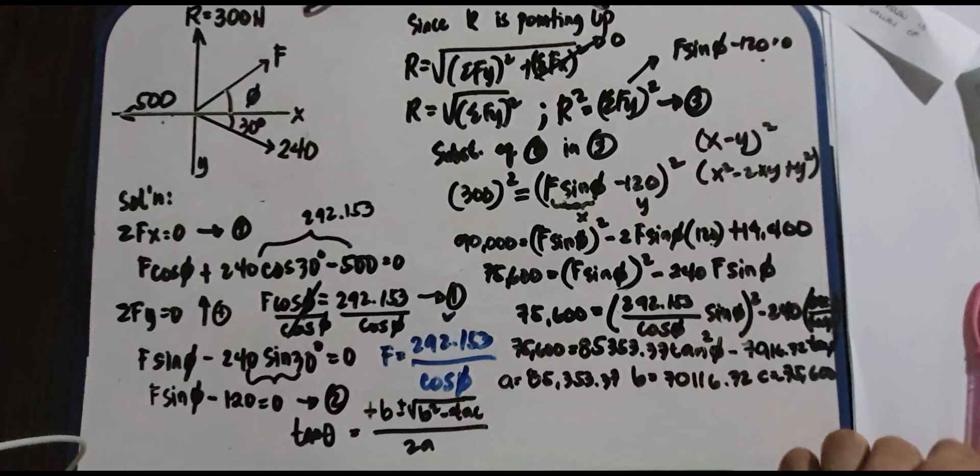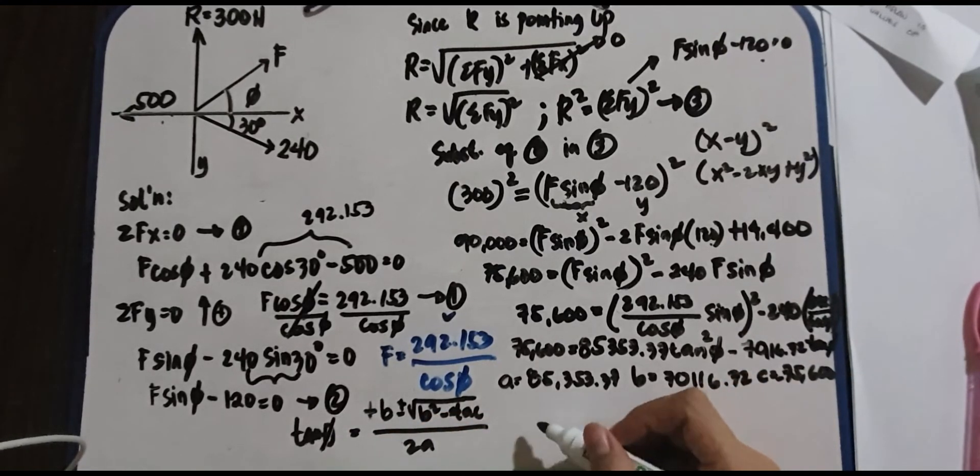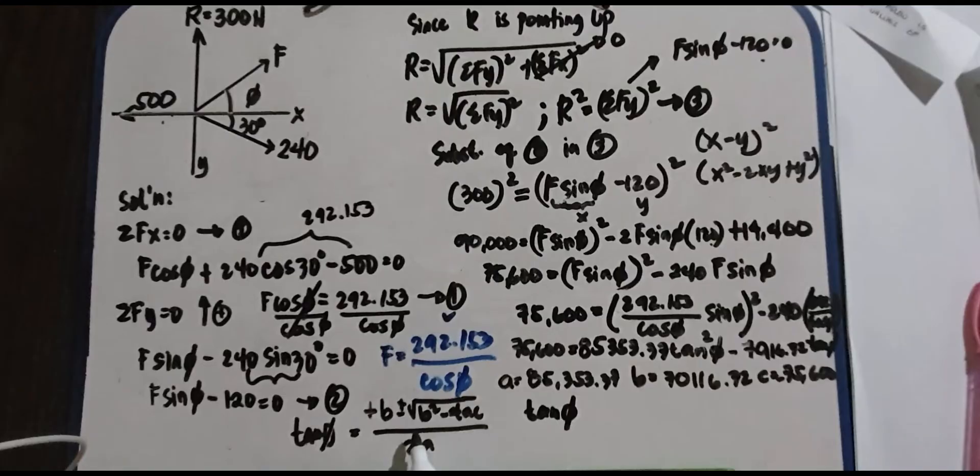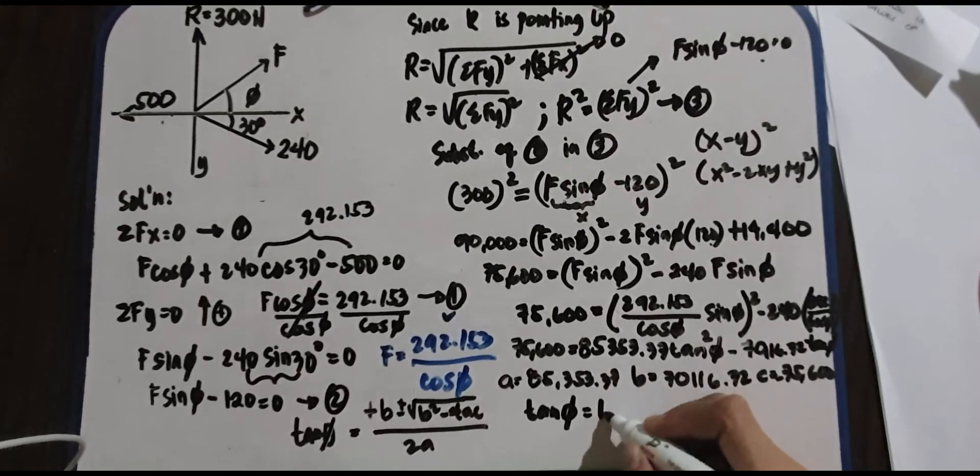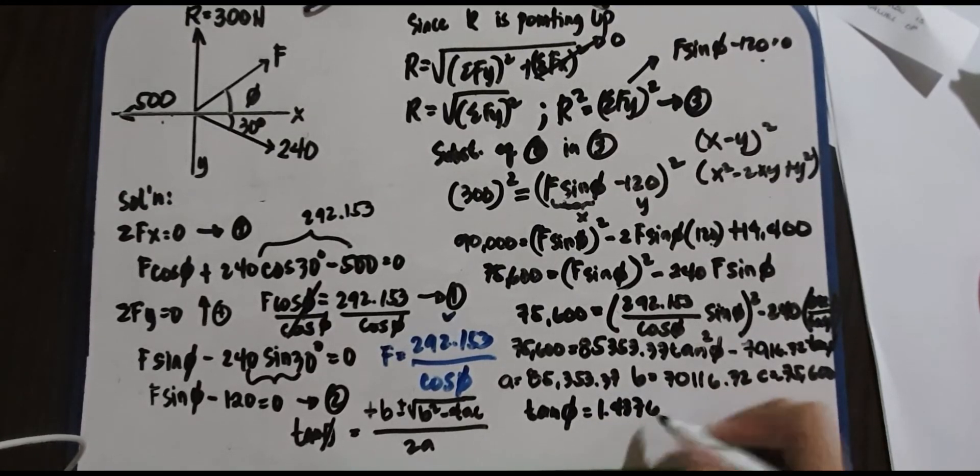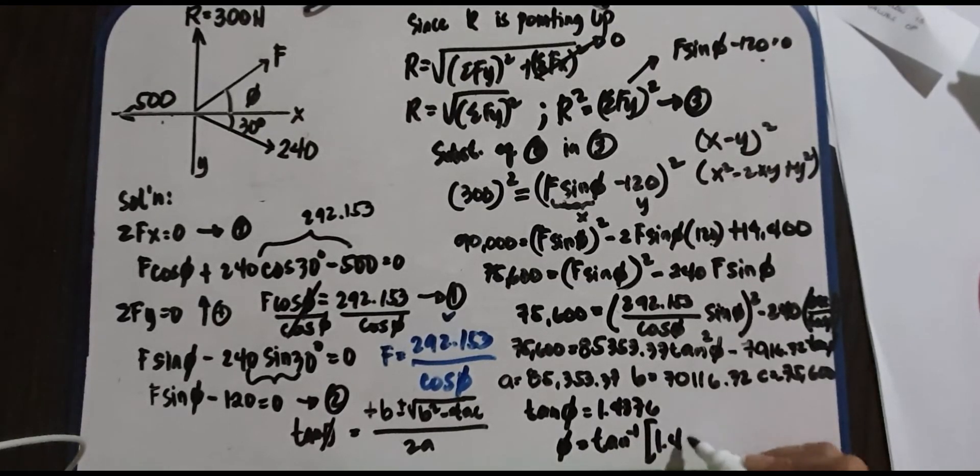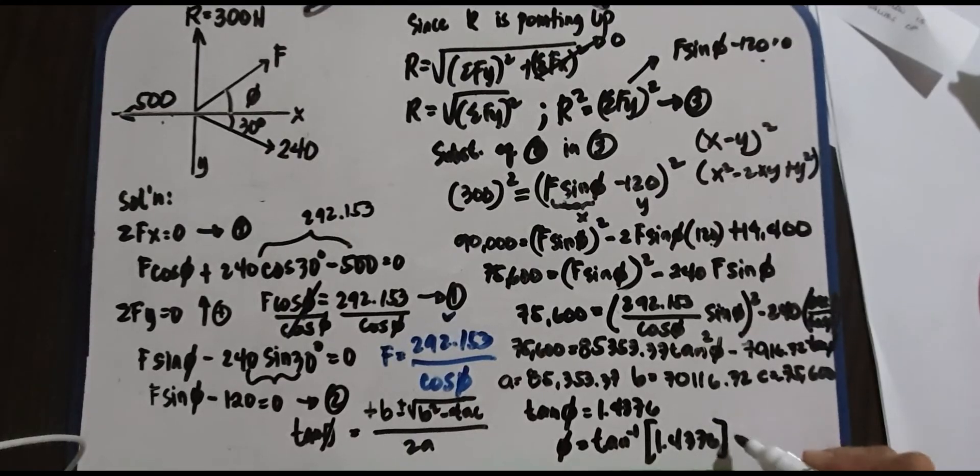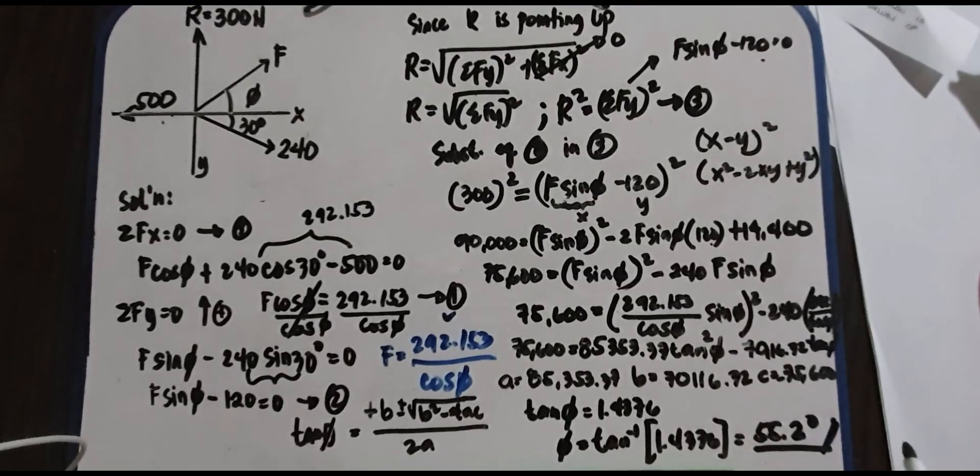What's the value of that? We have tangent phi. If you use this on your calculator, you'll get 1.4376. If we continue with that, we have shift tangent inverse of 1.4376. So the value is 55.2 degrees. So that is your phi.